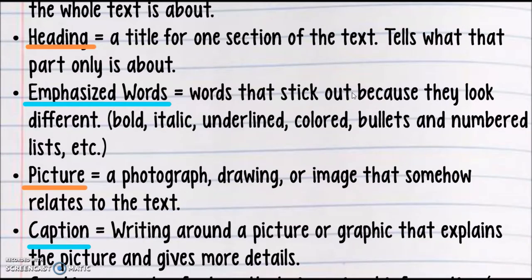What do we call those? Well, obviously a picture, right? First off, it's a photograph, a drawing or image that somehow relates to the thing. But that thing on the side is called a caption. Writing around the picture or graphic that explains the picture and gives more details. This is where I tend to see readers really skip are the captions. You know, most of the time, it's not just there to give credit to someone for taking the photograph. It is there to help inform the article. It's called a text feature, and it is very important that when you are reading these things that you do not skip. So now we have picture and caption to add to our definition. Pause here and get your definitions.